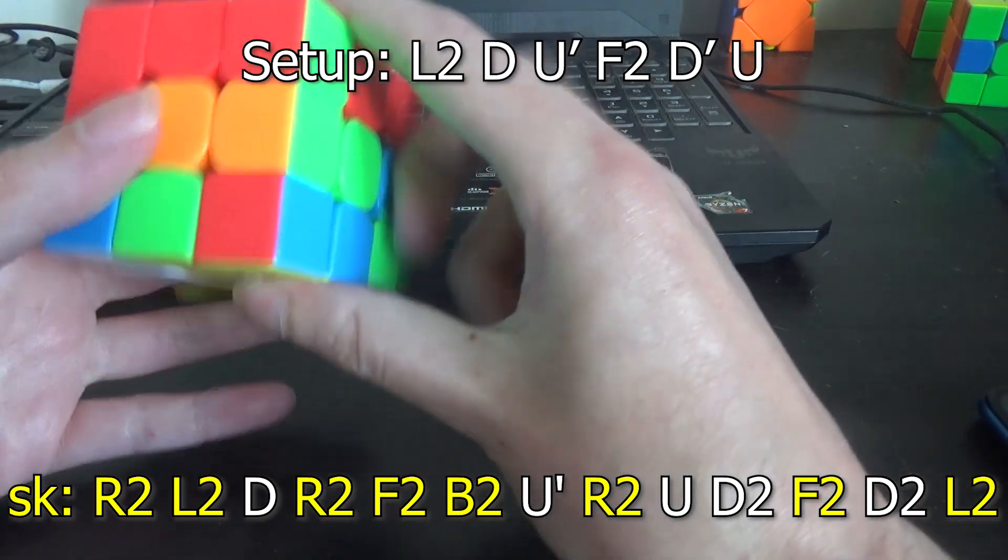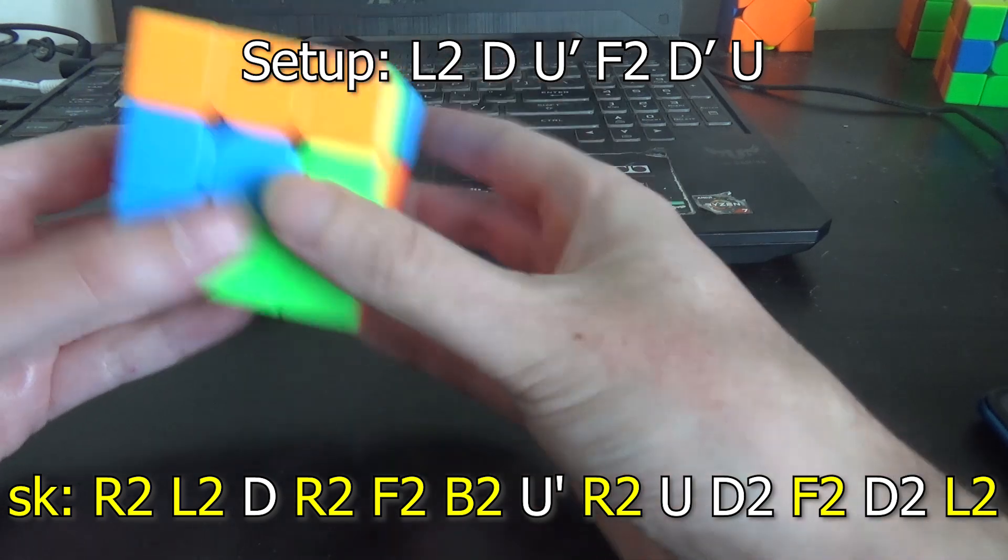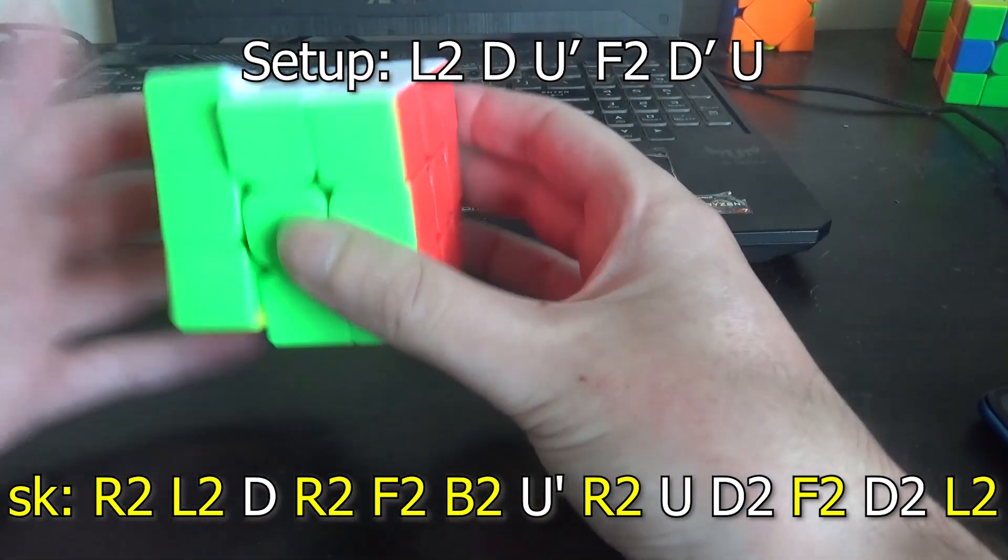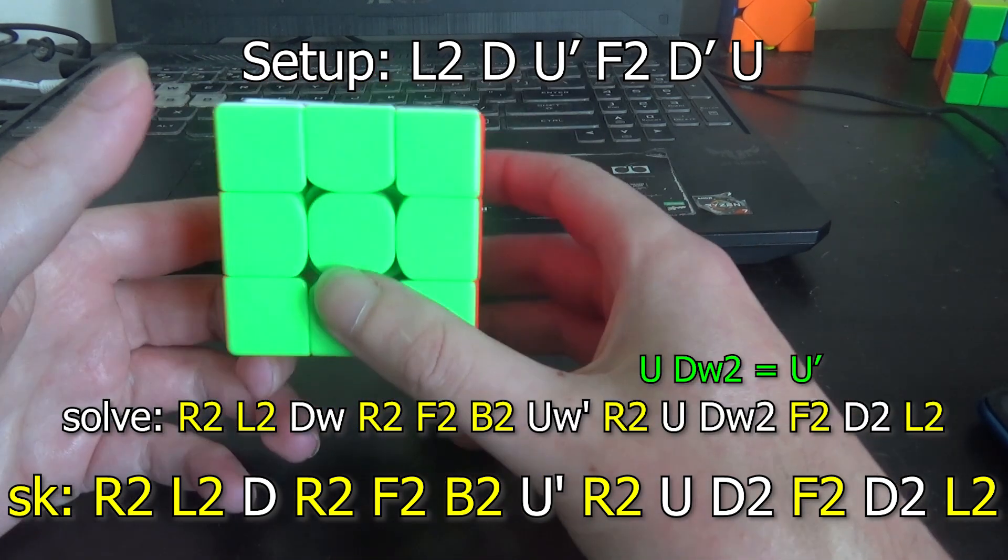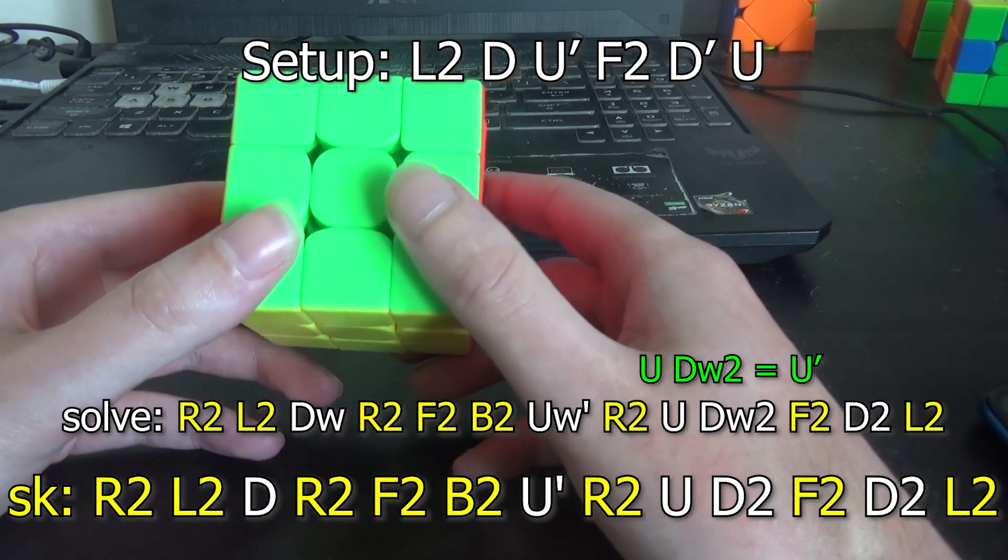DW, R2F2B2, UW prime, R2U, DW2, F2D2L2. And that works. And that adds negative one moves. So we've gone from slice in 22 to solved in 21.